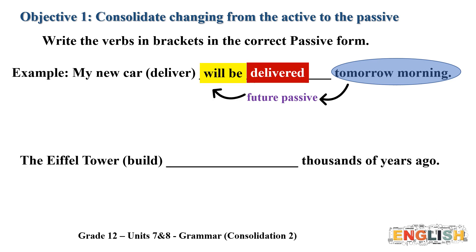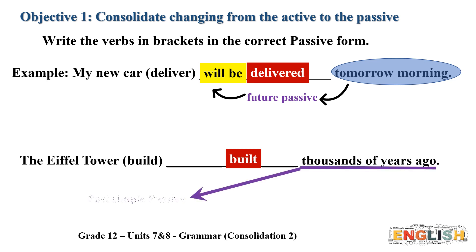Now take this example: pause the video and write the verb 'build' in the correct passive tense. The first step is to write the past participle. The time expression 'thousands of years ago' tells us to use the past simple passive, so we write 'was built.'